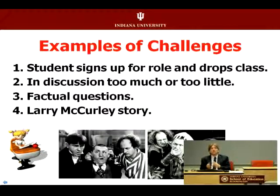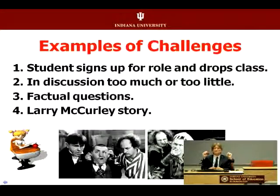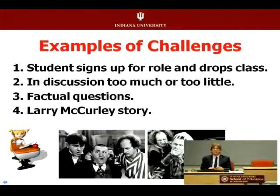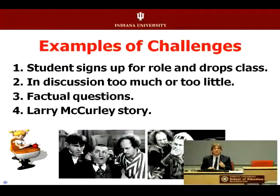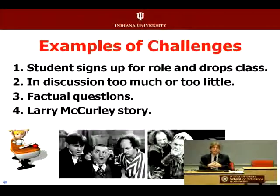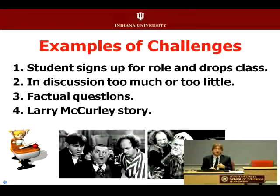Too much discussion or too little discussion from the instructor is a problem. If the instructor is in too much, students will sit back and wait for the instructor to pontificate. If you're in too little, the discussion will flounder. When instructors ask factual questions — like when was the cotton gin invented — one student answers and all 30 don't need to respond. I had a student I called Larry McCurley who dominated discussion, so I created a role called the 'blood ledger role,' which requires pointing out criticisms of other people's posts but doing so in a polite manner.